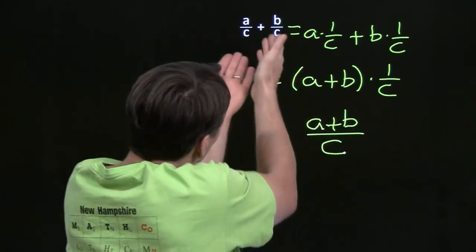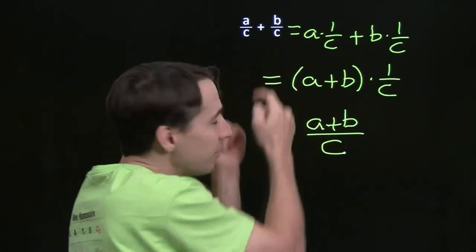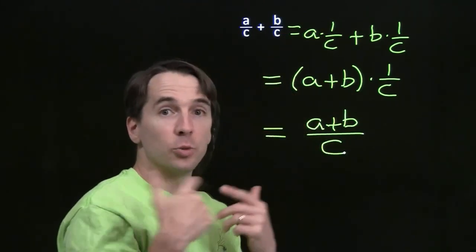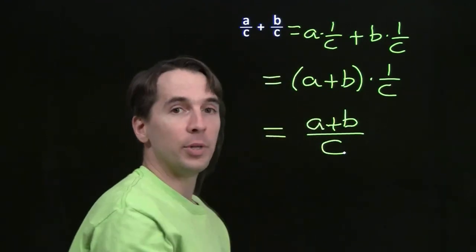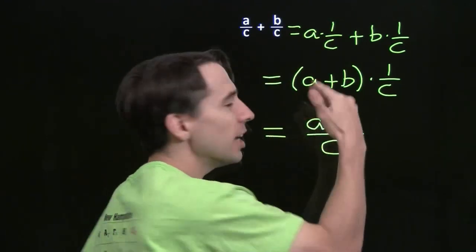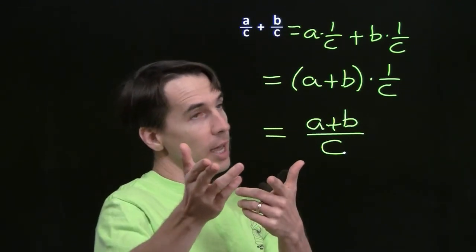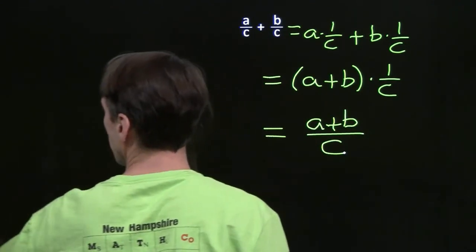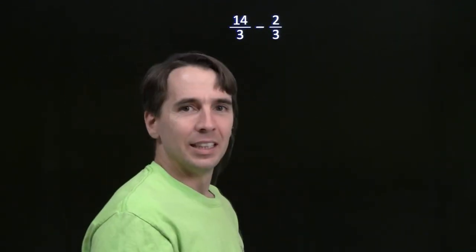Sure enough, any two fractions — if they have the same denominators — we can add them just by adding up the numerators. We get (a plus b) over c. So that takes care of addition. You know what's next: subtraction!